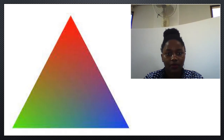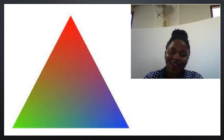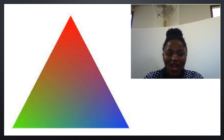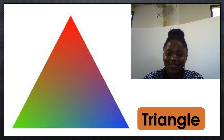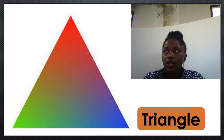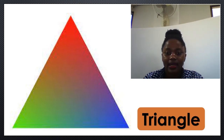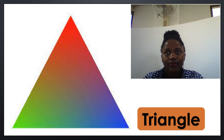And next we have this. How do we call this shape? Wonderful! It's called a triangle. Triangle. Triangle. Could you please repeat after me — it's called triangle. Let's spell it: T... R... I... A... N... G... L...